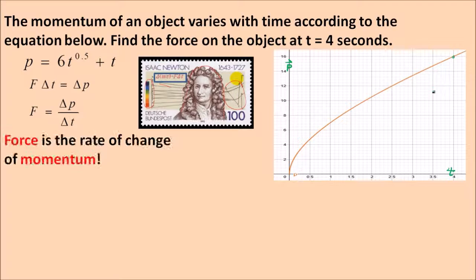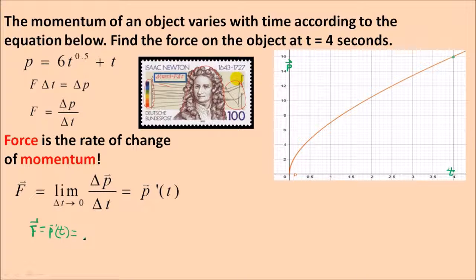So that's how you would find the average force between two different times. How do we find the instantaneous force? Of course. Force is the rate of change of momentum. So we find the instantaneous force by taking the limit as that time interval gets smaller and smaller. In other words, the derivative of the momentum. That's sweet, isn't it? This has to be the momentum as a function of time, but that's exactly what we have. So if I want to find the force, it's going to be p'(t), and that's 3 times t to the negative 0.5 power plus 1. Or if you prefer, 3 over the square root of t plus 1.